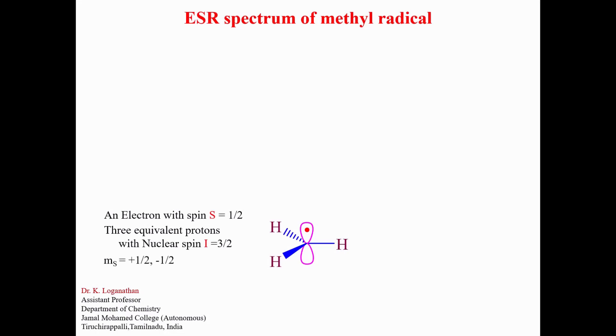Hence, MS equals plus one-half or minus one-half. MI equals plus three-halves, plus one-half, minus one-half, and minus three-halves.